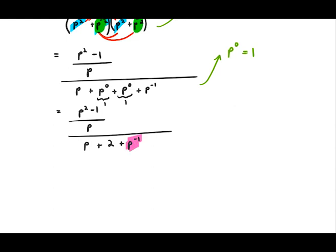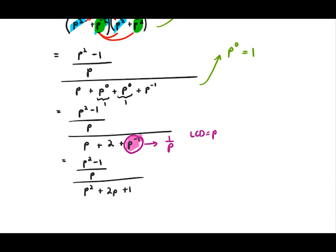We have p to the negative one in the denominator, so just as we did in the numerator, write that as one over p. Using a lowest common denominator of p, the denominator becomes p squared plus 2p plus one, all over p.